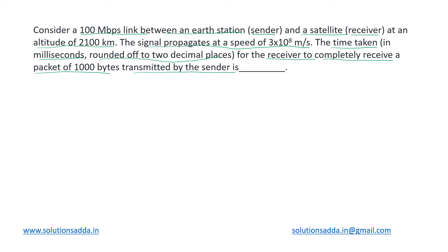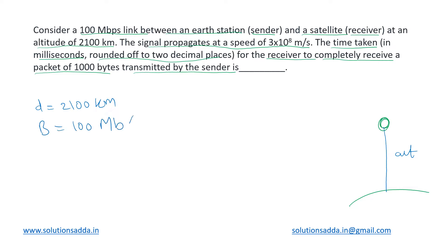The sender is the Earth station and the receiver is the satellite, so the distance equals the altitude. Let's note down all the parameters: distance = 2100 kilometers (same as the altitude), bandwidth = 100 Mbps (100 megabits per second), propagation speed = 3×10⁸ meters per second (speed of light), and the packet length = 1000 bytes.